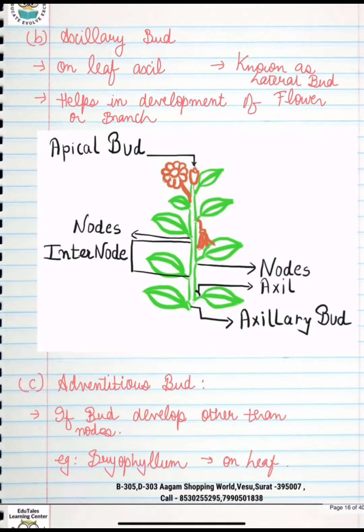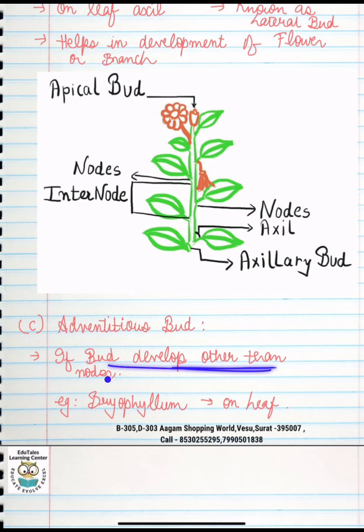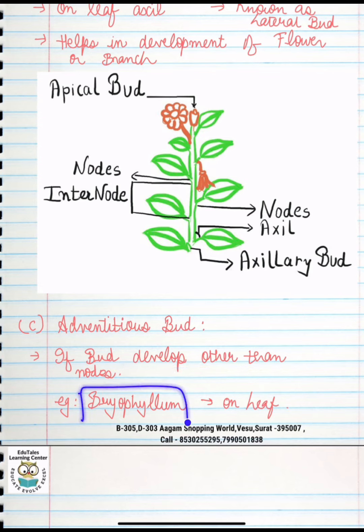The last type is adventitious bud. What do we mean by adventitious bud? Here, bud develops but not in the nodal region. Where will it develop? Take the example of Bryophyllum — here, leaves will develop.